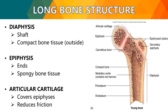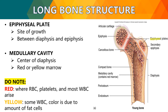For long bone structures, we have the diaphysis, also known as the shaft, which is composed of compact bone tissue. Next is the epiphysis, which is the end of the bone and contains spongy bone tissue. The articular cartilage covers the epiphysis and functions in reducing friction. The epiphyseal plates are the site of growth, found between the diaphysis and epiphysis. Bones contain cavities such as the large medullary cavity in the diaphysis and smaller cavities in the epiphysis, all filled with soft tissue called marrow.